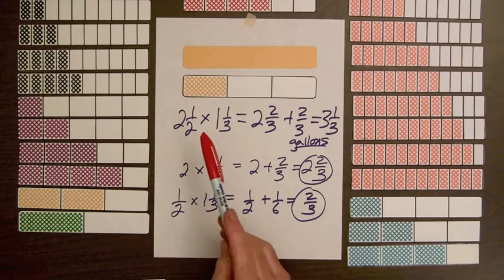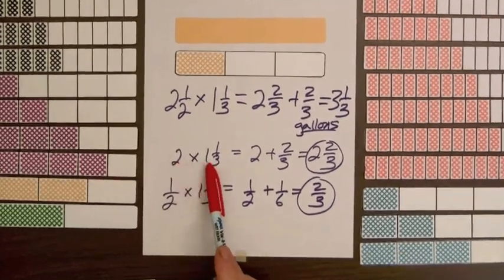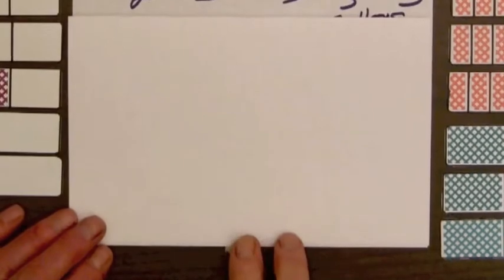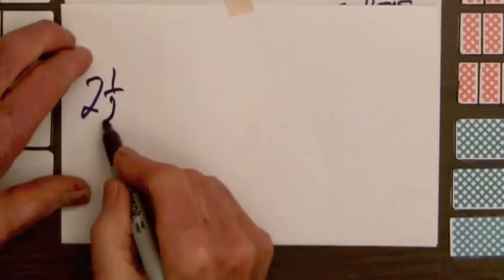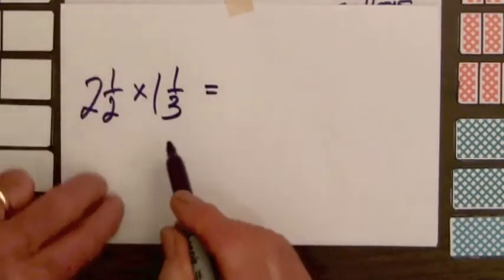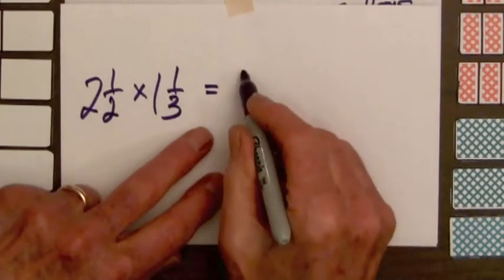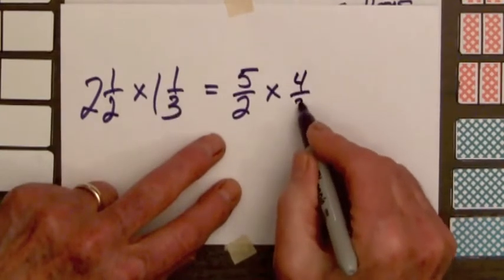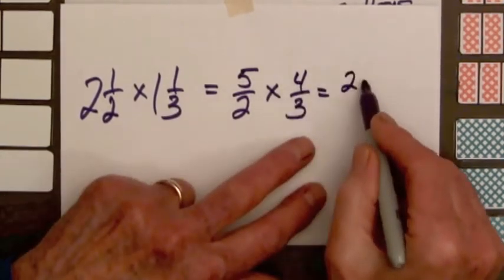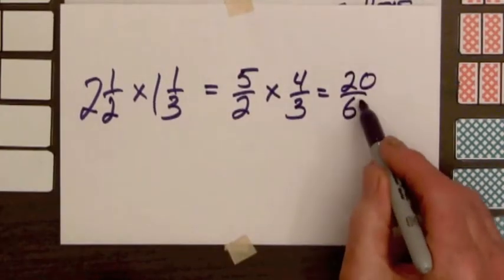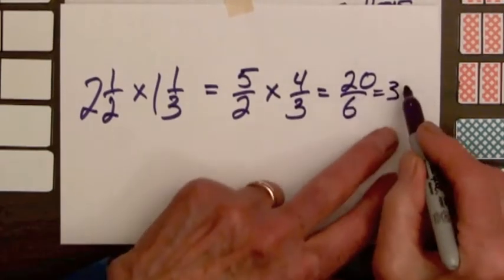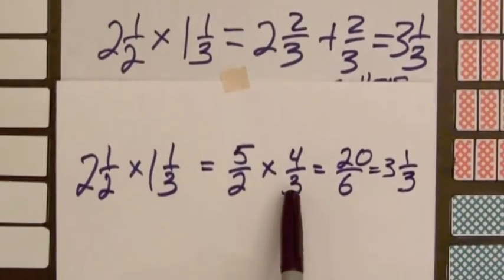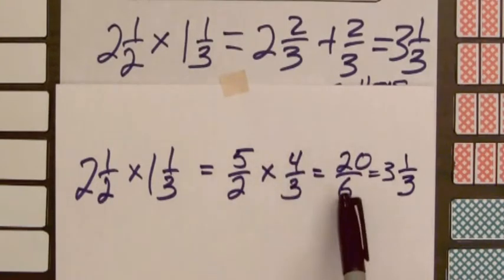To find the total paint for two and a half walls, we used two products: two times one and a third, and a half times one and a third. These two partial products can be avoided by using improper fractions. Two and one-half times one and one-third becomes five over two times four over three, which equals twenty over six — and since there are six parts in a whole bar, that gives three whole bars and two-sixths, or three and one-third.